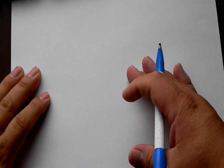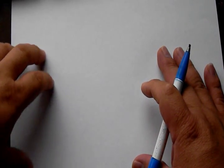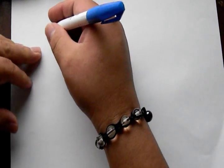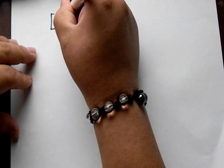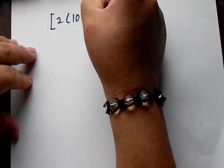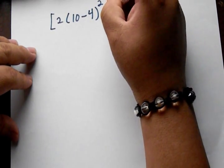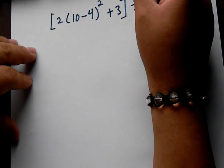Today I'm going to be showing you how to simplify an expression, and I'm going to use this example. So let's say if I have an expression with 2 times (10 minus 4) to the power of 2 plus 3, and then it's divided by 5.